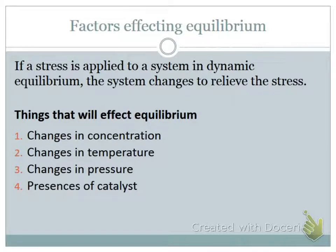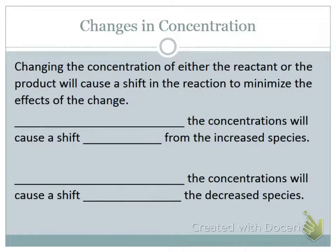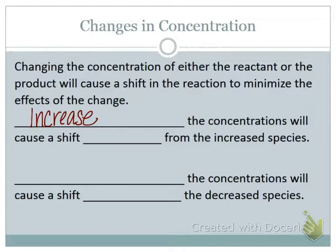These are the things that can affect the equilibrium. Put a star by catalyst because we'll find it makes no difference, but we need to talk about it. Let's talk about changes in concentration first. If I change the concentration — adding or removing a reactant or product — if I increase the concentration, this will cause a shift away from the increased species. Whatever concentration I increase, the reaction shifts away from it. If I increase one of the reactants, it will shift away toward the products. If I increase one of the products, it will shift back toward the reactants.